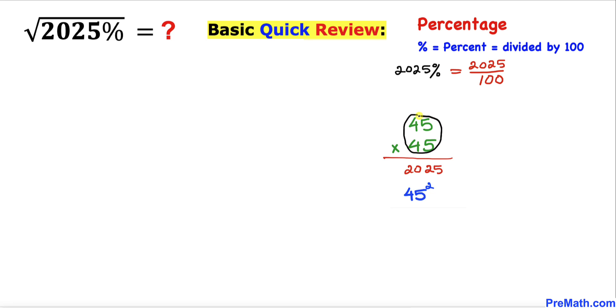And now 45 times 45 is same as 45 squared. So therefore 2025 equals to 45 squared. So I'm going to write down 45 squared divided by 100, which could be written as 10 squared.